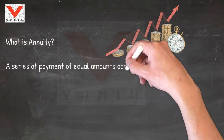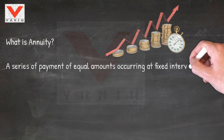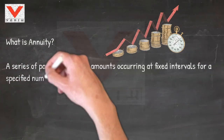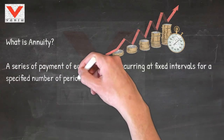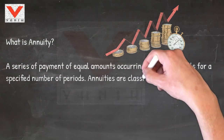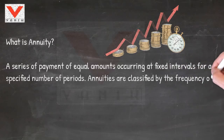A series of payment of equal amounts occurring at fixed intervals for a specified number of periods. Annuities are classified by the frequency of payment dates.